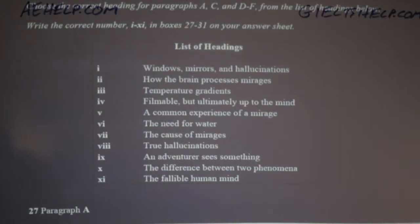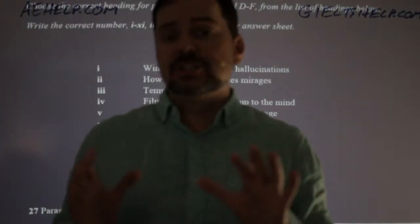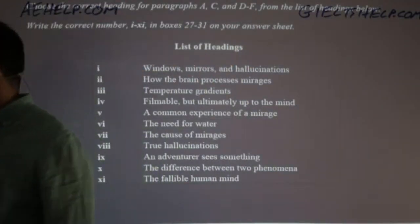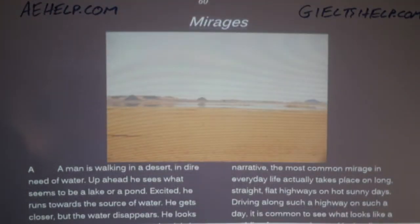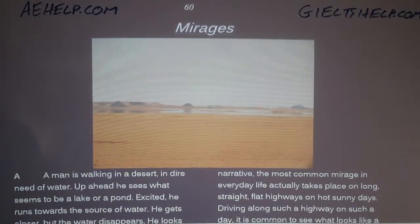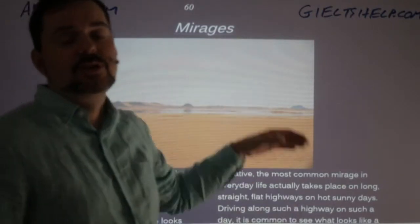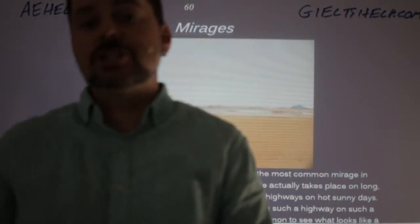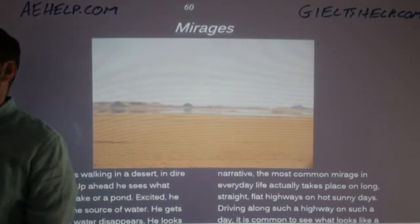With list of headings questions, you really want to do a good job because they help you figure out answers for other questions in that passage. Before you go through the list of headings, look at the title of the passage — that should always be your first step. The title of this passage is 'Mirages.' The pronunciation for the singular is 'mirage' and the plural is 'mirages.'